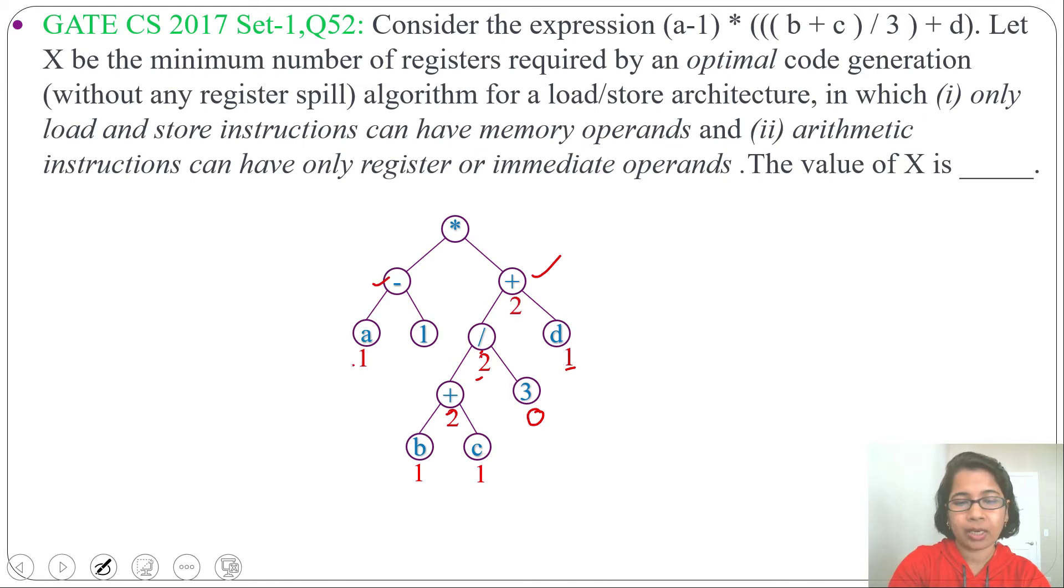Next, for this minus, one level is 1, another is not assigned. Let's take 0. So this minus level will be 1, maximum level of both child. Now for this multiplication, one child level is 1, another child level is 2. So maximum of both will be 2. We got root level as 2 means 2 registers are required. So answer will be 2.